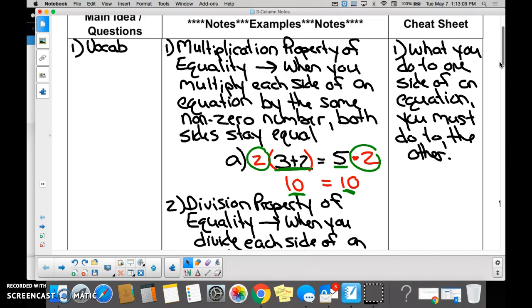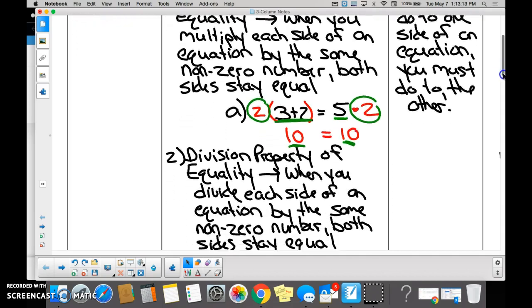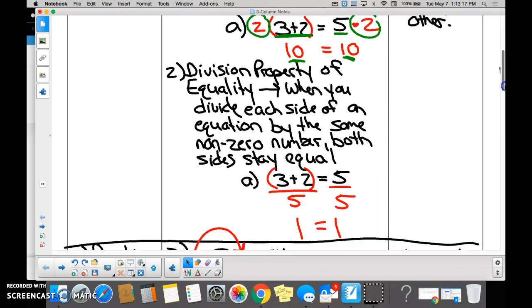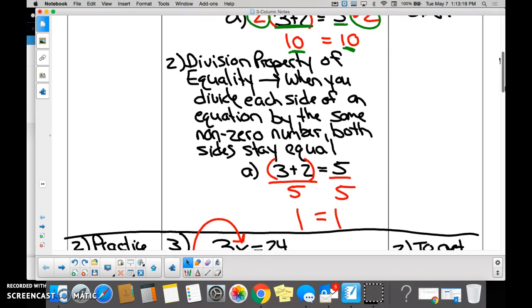Division property of equality states that if you divide one side of the equation by a number, you must divide the other side by the same number, as long as it's not zero. So if I have 3 plus 2, and I have 5, I'm going to divide this all together by 5 to get 1, and I'm going to divide this by 5 to get 1.